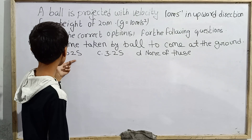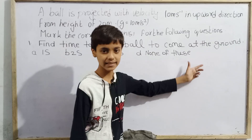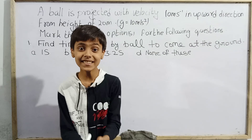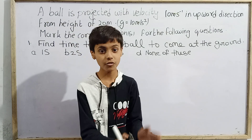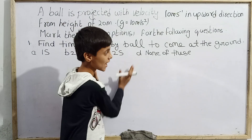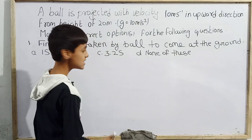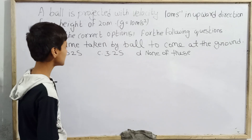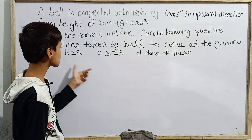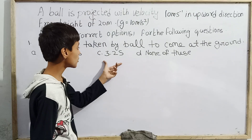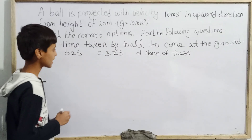The first question is to find the time taken by the ball to come to the ground. This question is divided into two parts. We will solve the first question first and then the second. The options for question one are: 1 second, 2 seconds, 3.2 seconds, and none of these.